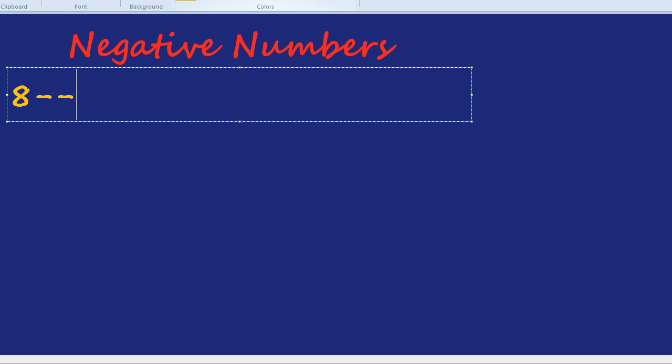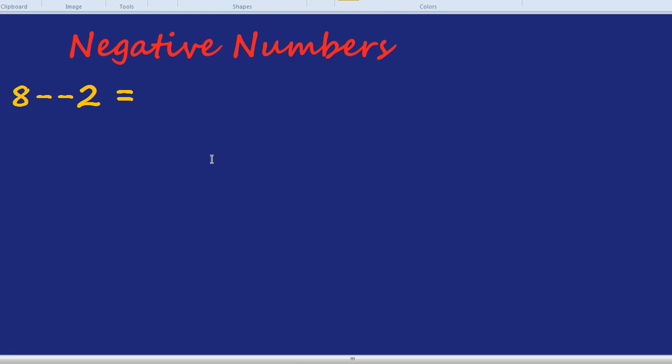8, take away negative 2. Here's the trick that I'm going to try and use to turn negative numbers into your friend. We're going to think about them in terms of debt. So any time we see a negative we're going to circle it when it's next to a number and call it a debt.